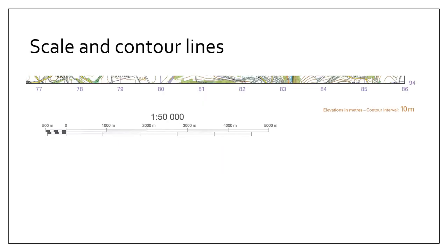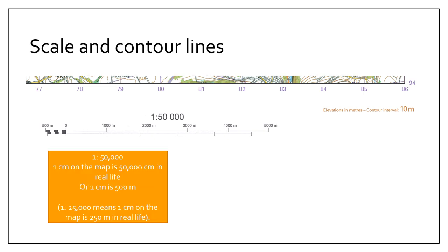Also double-check what the scale and contour line interval is and make a note. For example, if the scale says 1 to 50,000, that means 1 centimeter on the map is 50,000 centimeters in real life, or 1 centimeter equals 500 meters. If the scale is 1 to 25,000, that means 1 centimeter on the map is 250 meters in real life. It might be worth writing that down before you start so you have a point of reference.